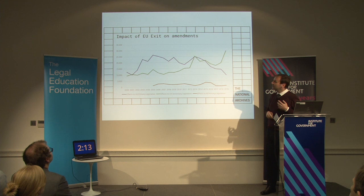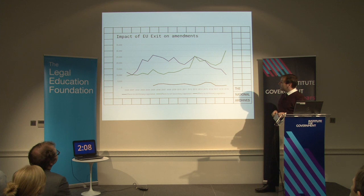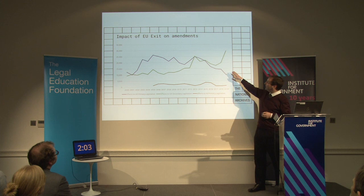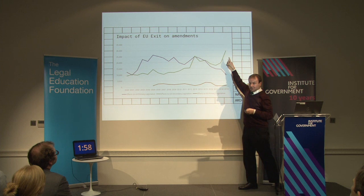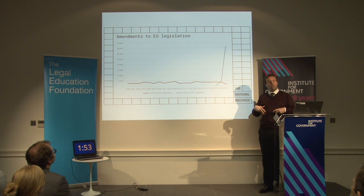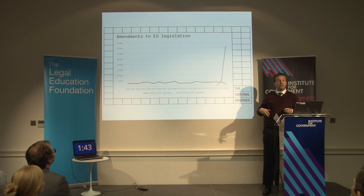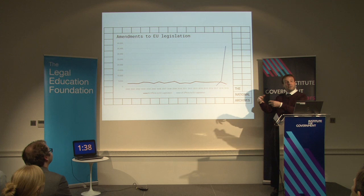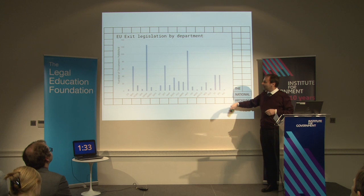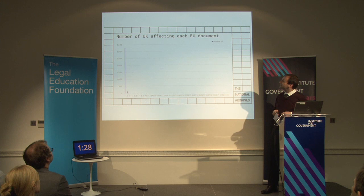Having all this data about amendments means we can do some quite interesting analysis on the impact of EU exit on our own domestic statute book. Here you can see the drop in the number of amendments to UK primary legislation and the increase in amendments to UK secondary legislation. If you look at what we're doing with amendments to EU legislation, this red line is the EU amending EU legislation, and the hockey stick diagram is the number of amendments that the UK's EU exit SIs are making to that incorporated body of EU law. Here's a glimpse at who's doing the work — DEFRA and HMT have been very busy.